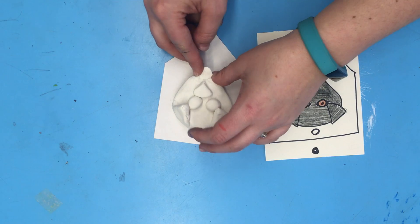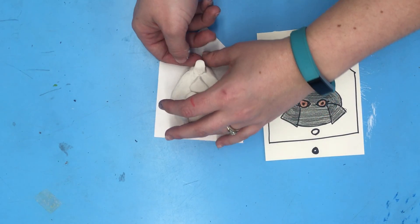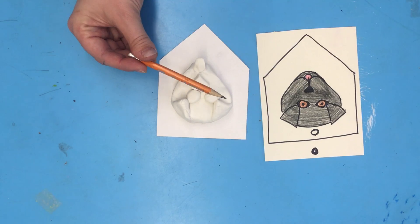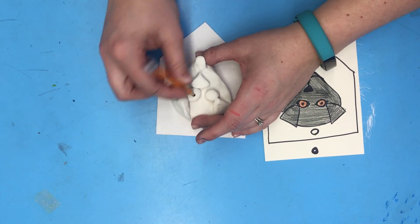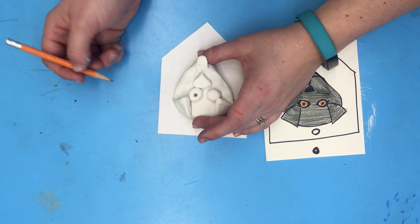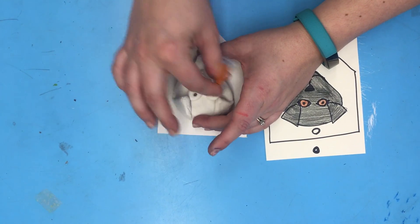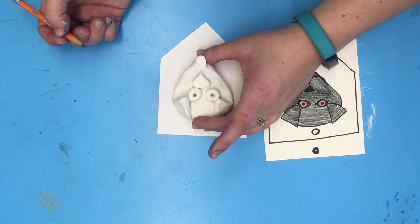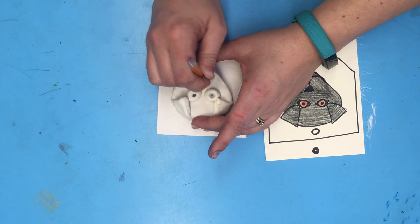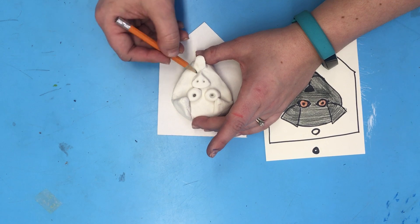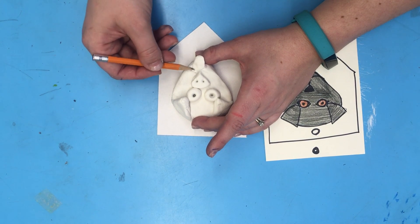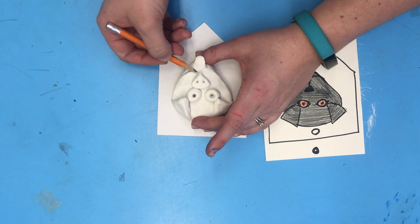When everything is all put together, you want to start to add the details. And you can just use a pencil for that. So for the eyes, I'm going to use the end of my pencil to create the pupils. I might put a couple nostrils in the nose. I might press down those cheeks.